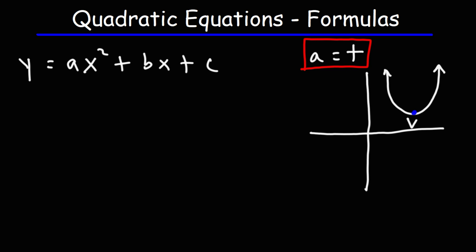When that happens, the lowest point is known as the vertex. The line that passes through the vertex — this dashed line — is the axis of symmetry, and it's equal to the x-coordinate of the vertex. So if you want to find the coordinates of the vertex for an equation in standard form, the x-coordinate is negative b over 2a.